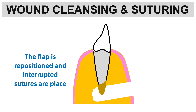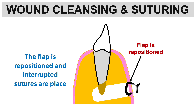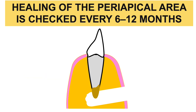The last step is wound cleaning and suturing. The flap is repositioned and interrupted sutures are placed. Then we wait for healing of the periapical area, checking every 6 to 12 months. Complete bone formation takes time, and on follow-up imaging a healed bone can be observed.